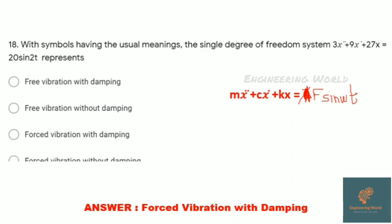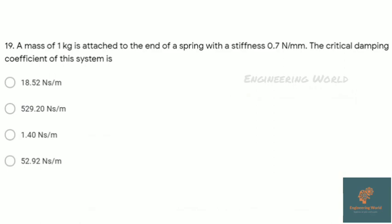A mass of 1 kg is attached to the end of a spring with stiffness 0.7 N/mm. The critical damping coefficient of this system is? This is a simple formula-based equation. For critical damping coefficient, cc = 2√(km), where k is spring stiffness 0.7 N/mm and m is given. By putting values, we get 52.92 Ns/m.